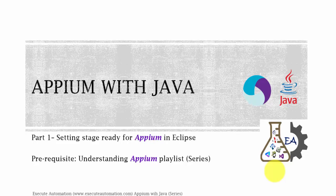This video series is exclusively for Appium with Java, so we are going to write code in Java for Appium. This is Part 1 of our Appium with Java video series. In this part we're going to talk about setting the stage ready for Appium in Eclipse. Before watching this part, I would request you to watch the Understanding Appium video series of our Execute Automation channel, since that playlist is going to be a foundational playlist for all the videos in this series.